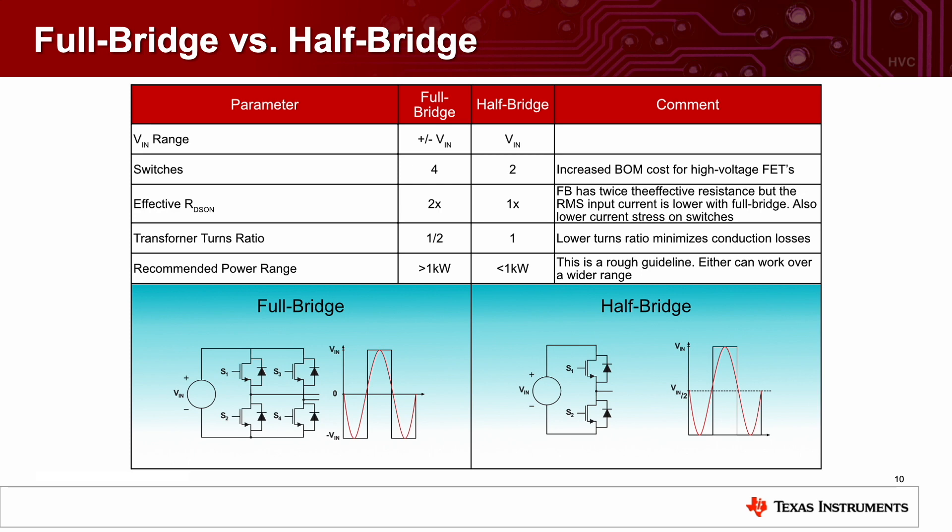As I mentioned earlier, the LLC can be in a half bridge or full bridge configuration. The biggest difference is you have two more switches when you go for a full bridge. You have double the voltage range, because it's plus and minus VIN instead of just VIN. And full bridge is typically used in applications that need more than one kilowatt of power. If you need less than one kilowatt of power, half bridge is usually the cheaper and more effective choice.